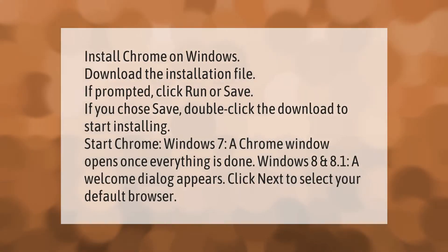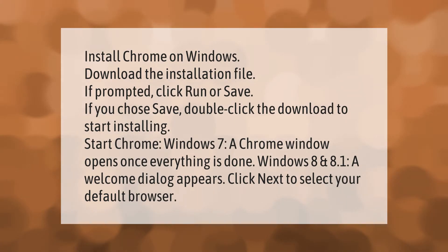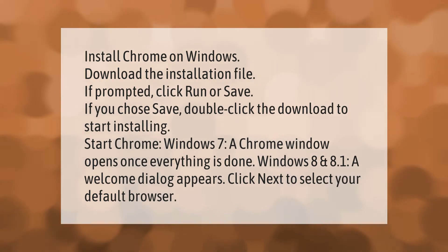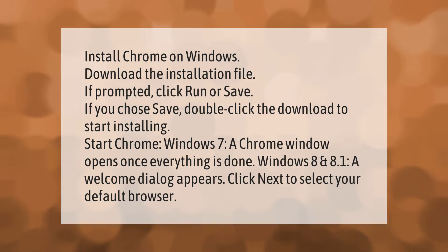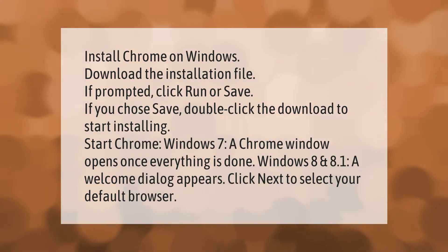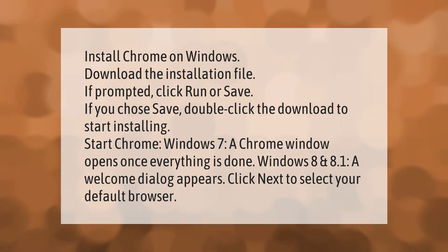To install Chrome on Windows, download the installation file. If prompted, click Run or Save. If you chose Save, double-click the download to start installing. On Windows 7, a Chrome window opens once everything is done. On Windows 8 and 8.1, a welcome dialogue appears — click Next to select your default browser.